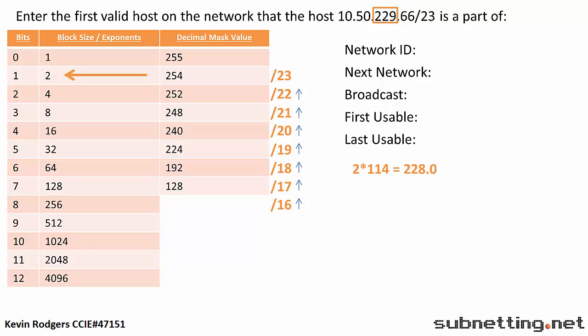2 times 114 is 228, where 2 times 115 would be 230, which is too much. This is just a simple way to find our network ID. The number 114 doesn't really mean anything — it only matters that it is an even number and it is the highest multiple of 2 that does not go over 229. You can achieve the same thing with division, if you prefer. We now have our network ID, which is 10.50.228.0.